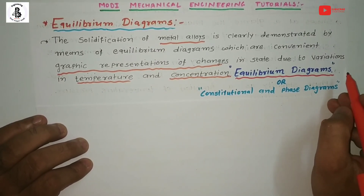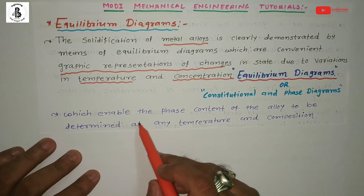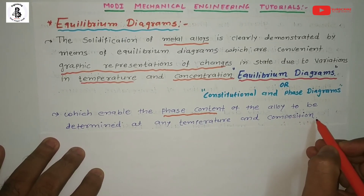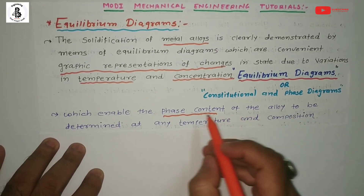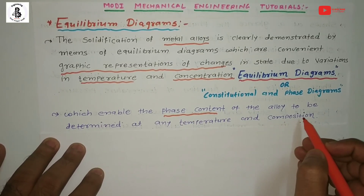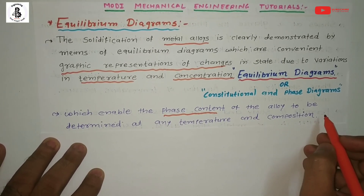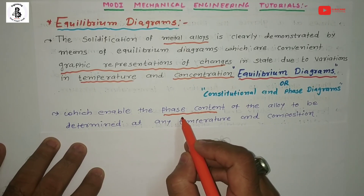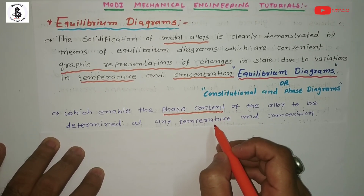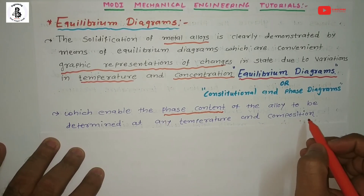Most authors represent it as an equilibrium diagram. These diagrams enable the phase content of an alloy to be determined at any temperature and composition — whether that is a solid phase, liquid phase, or gaseous phase — with respect to temperature, composition, and one atmospheric constant pressure. According to the phase present, you can determine the required properties of the material.